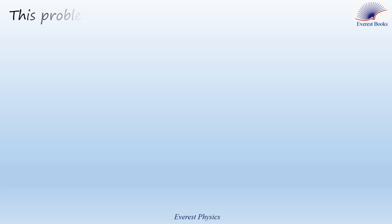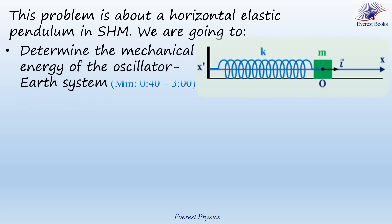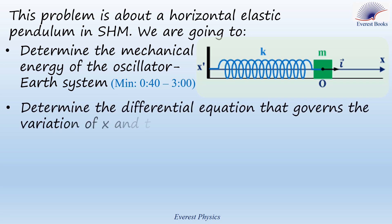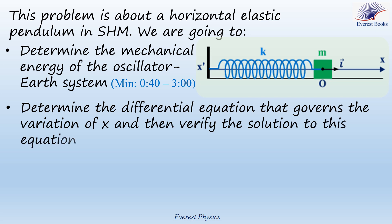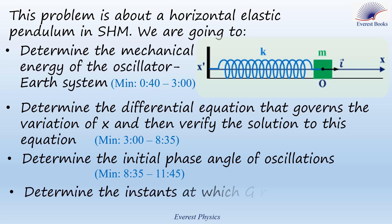This problem is about a horizontal elastic pendulum in simple harmonic motion. In this video, we are going to determine the mechanical energy of the oscillator-Earth system, determine the differential equation that governs the variation of x and then verify the solution, determine the initial phase angle of oscillations, and finally determine the instance at which G reaches O.